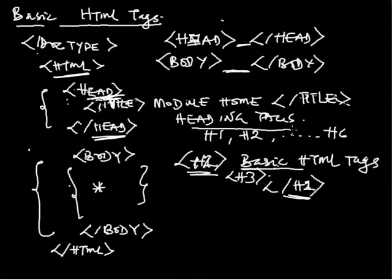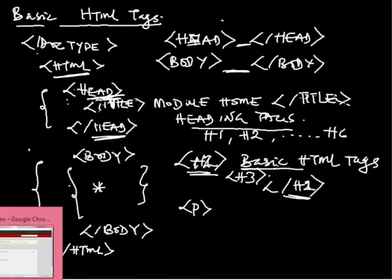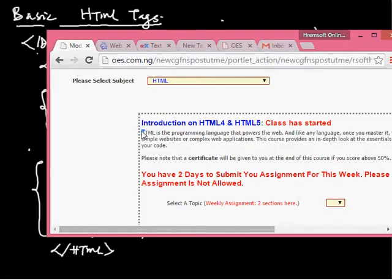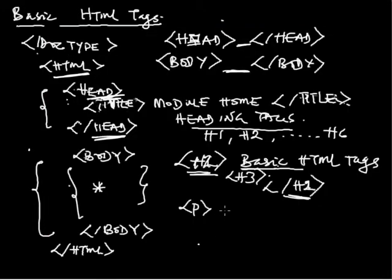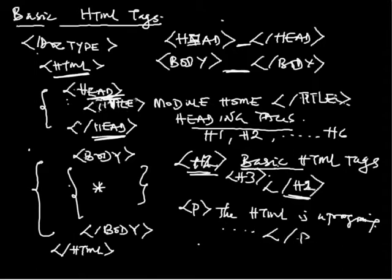That covers heading tags. Now you also have the paragraph tag. If you use the paragraph tag, you can write a whole paragraph. For example: 'HTML is a programming language...' then close the tag. That is a paragraph tag. It tells the browser to create a paragraph — whatever content you put there will have space on top and space below it.